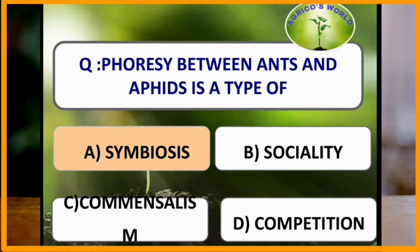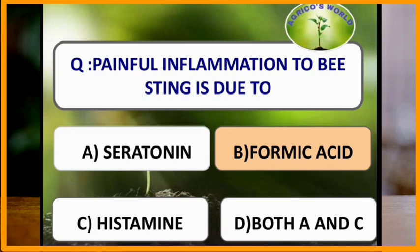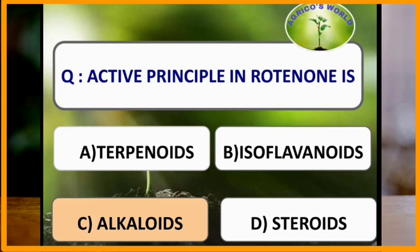The botanical which is highly toxic to fishes is rotenone. Rotenone is extracted from the roots of Derris elliptica. Painful inflammation due to bee sting is caused by formic acid. The first photo-stable synthetic pyrethroid is permethrin. The active principle in rotenone is alkaloid.